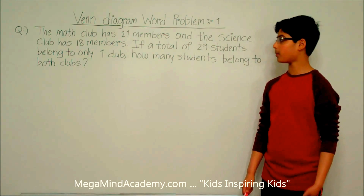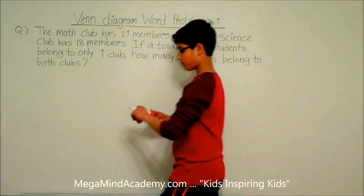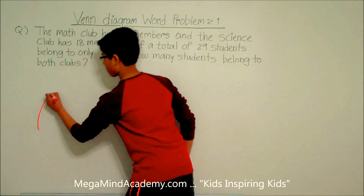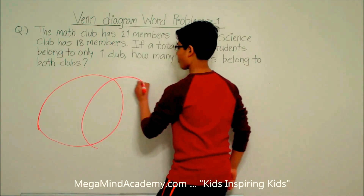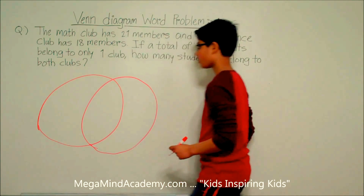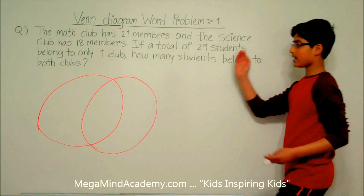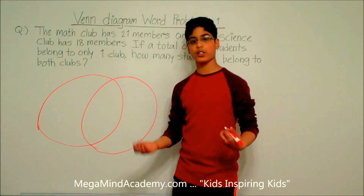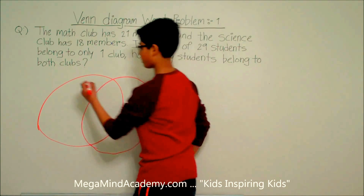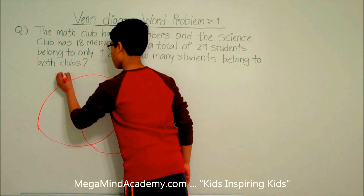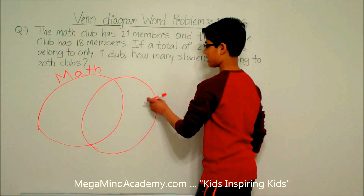Now to solve this problem, we need to draw a Venn diagram. So let's draw the Venn diagram. It says that the math club has 21 members and the science club has 18 members, so there are two clubs: the math club and the science club. Let's label this circle as the math club and let's label this circle as the science club.